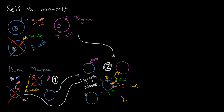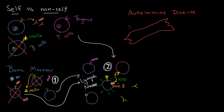Even though your body has these mechanisms to keep your immune system from reacting to yourself, it still happens sometimes — the process goes wrong and the result is autoimmune disease. It's called autoimmune because your immune system starts attacking your own body, and some pretty terrible diseases can result. To bring it to life, here's one example: this is a muscle fiber, and the way muscle fibers are activated is that they have a receptor ready to receive little molecules from a neuron.